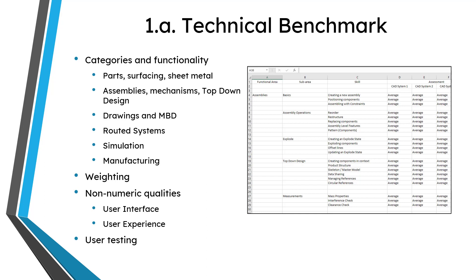For example, that includes your part modeling, your assembly modeling, how you want to do drawings or model-based definition, routed systems like cabling or piping, simulation, analysis, and manufacturing. List all the major functions that you want your new CAD tool to perform and then assign a weighting to the importance of those different functions. For example, you might have a stronger need for top-down design than surfacing, so assign the appropriate weighting to those different areas.